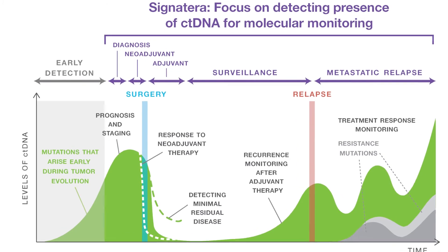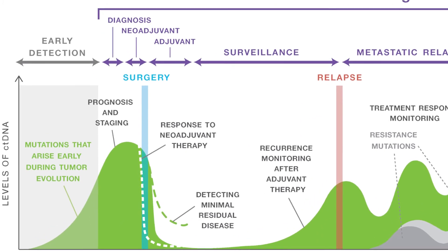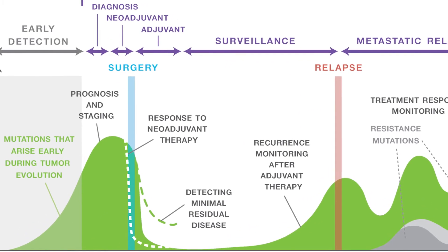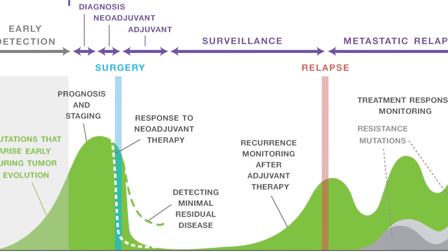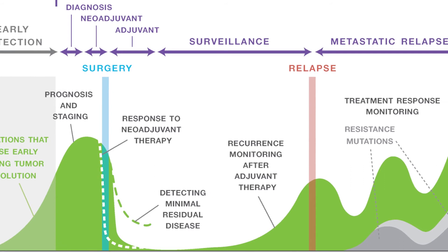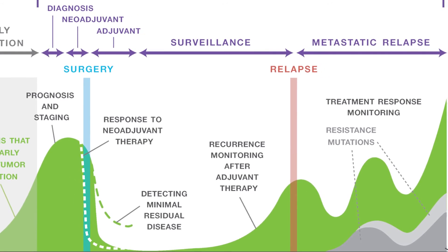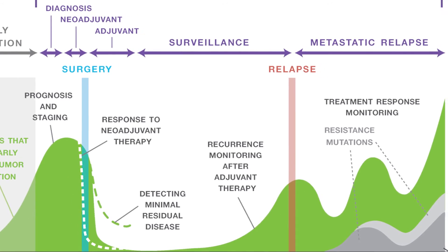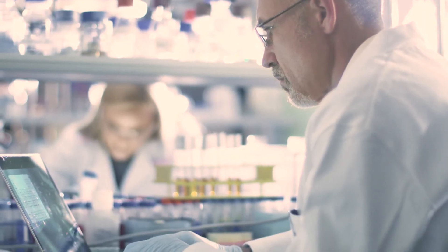Signatera can be used as a biomarker to track therapeutic treatment response. For example, Signatera can identify how quickly the drug is working to decrease the overall tumor bulk in that patient, and also identify very quickly when the patient is losing treatment response and beginning to progress.